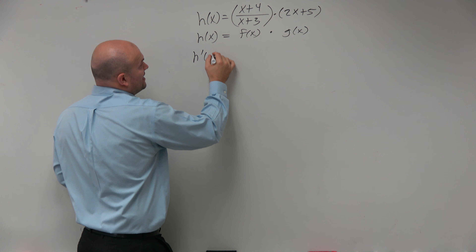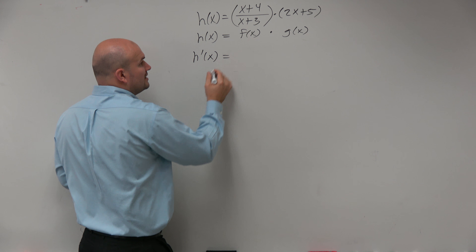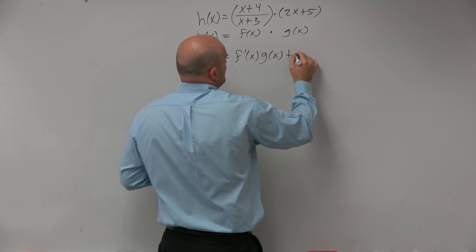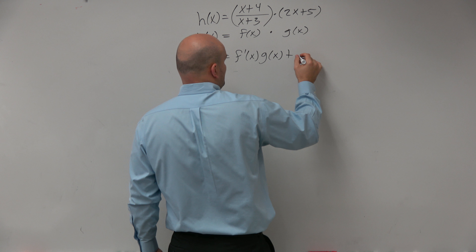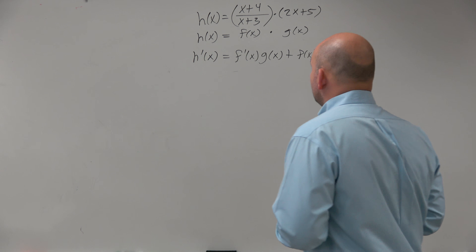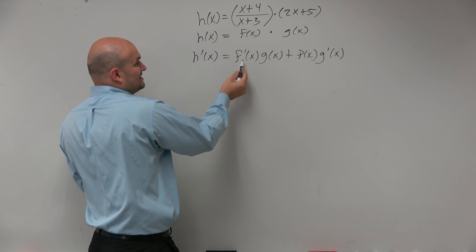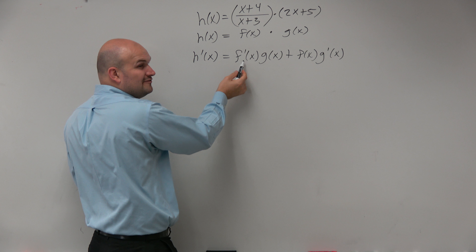In this one I'll use f of x notation just to help you guys out. h of x, let's pretend, is f of x times g of x. So if I'm using a product rule, I know h prime of x is going to equal f prime of x times g of x plus f of x times g prime of x. That would just be the product rule using the function notation.